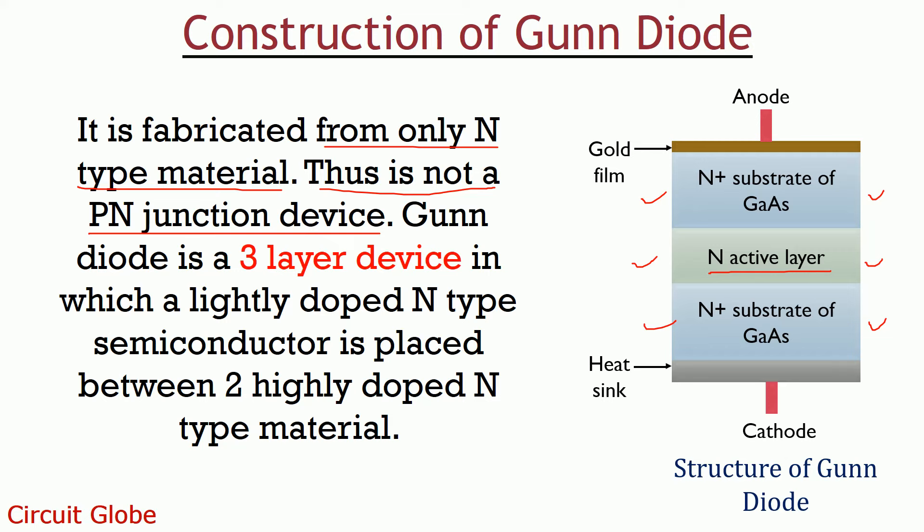This whole structure is mounted over a conducting base which acts as a heat sink as well as the cathode connection. The fabrication of a gold film at the top surface forms the anode connection of the device. Let's now understand how a Gunn diode operates.